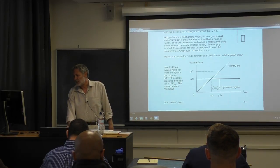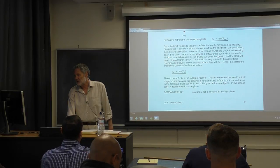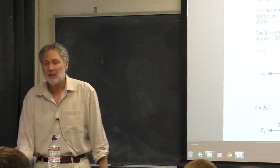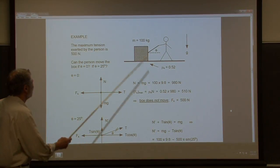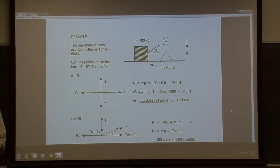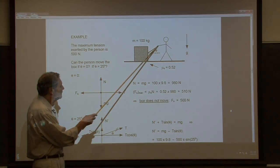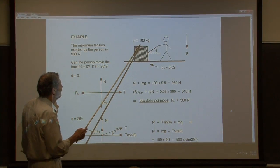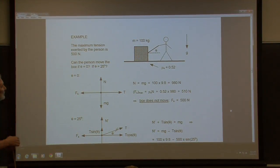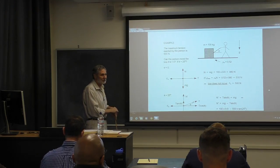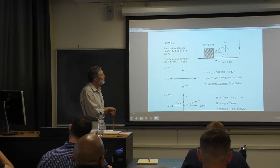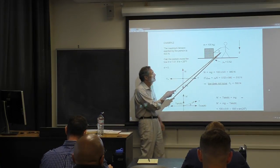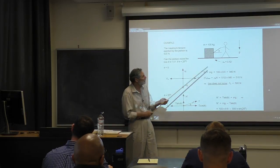Here's a practical example that might surprise you. We have a heavy box of 100 kilograms — roughly 220 pounds — and a person who can exert a maximum force of 500 newtons. There's a rope. We're given the coefficient of static friction, the mass of the box, and the magnitude of the force exerted by the person. The first question is: will the box move if the person pulls with a horizontal force?